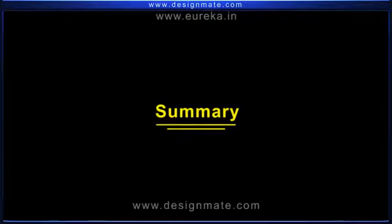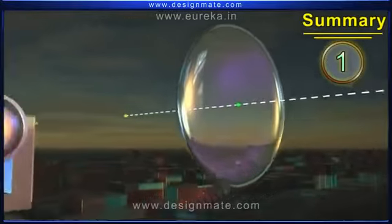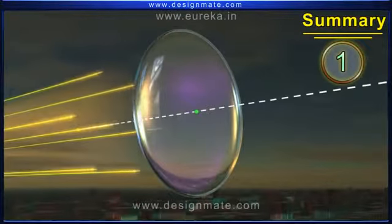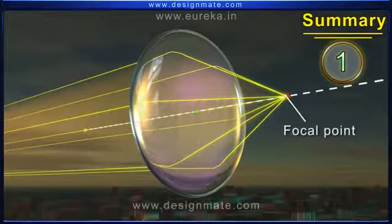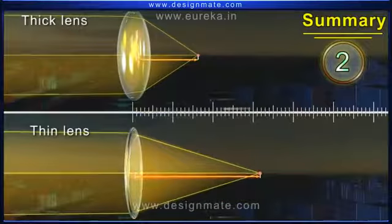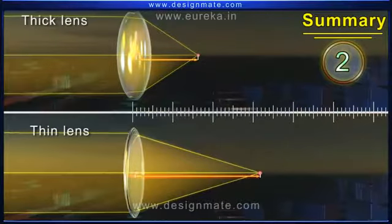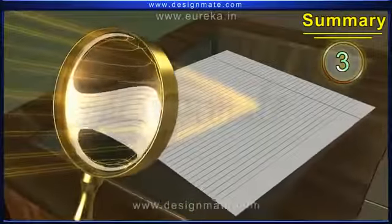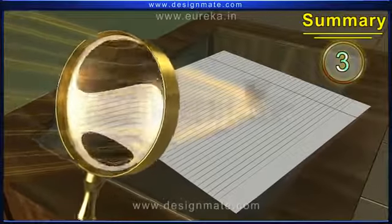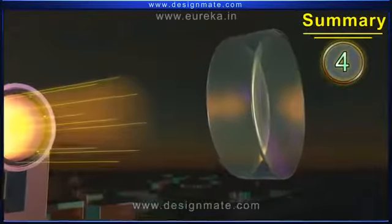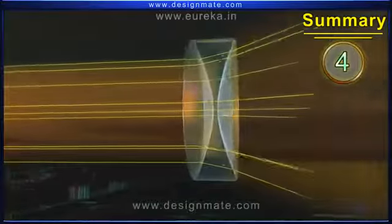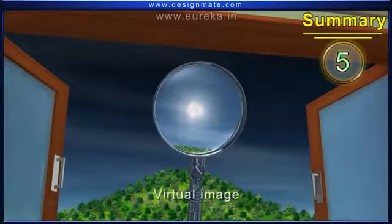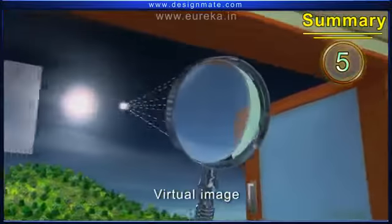To summarize, we have understood that: one, light rays parallel to the principal axis and incident on one side of the convex lens undergo refraction and converge at a point on the principal axis on the other side. Two, the focal length of the thinner lens is greater than that of the thicker lens. Three, a real image produced by a convex lens is formed on the other side of the object. Four, the parallel rays of light incident on a concave lens undergo divergence as they emerge on the other side. And five, the concave lens produces a virtual image — that is, an image formed on the same side of the object.